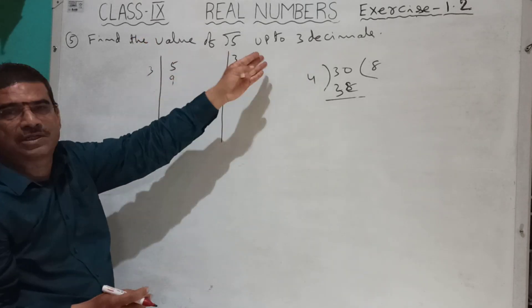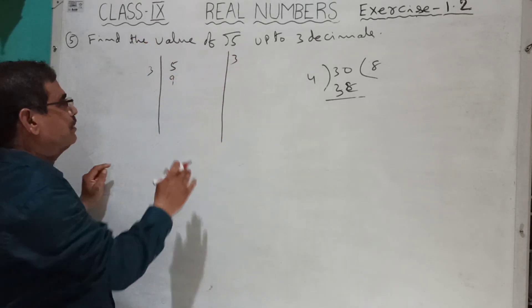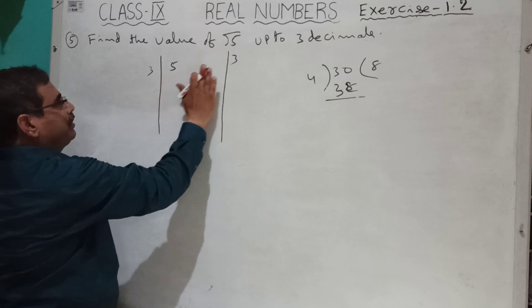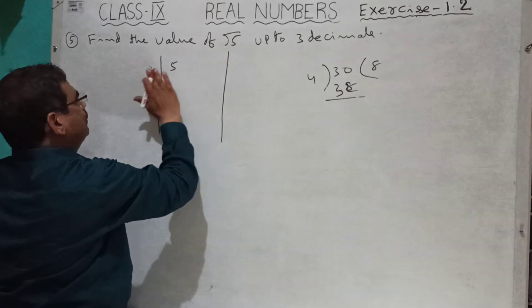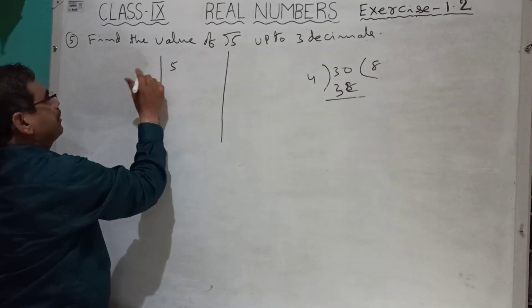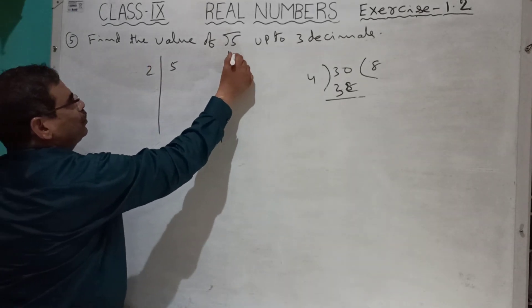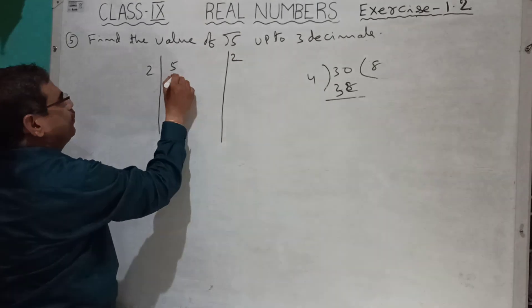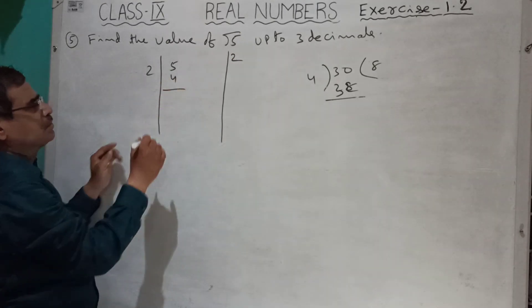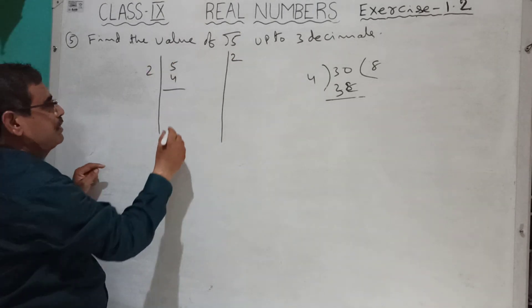Here 3 is not suitable. So what can I write? I can write 2. 2 twos are 4. So 1 is balance.